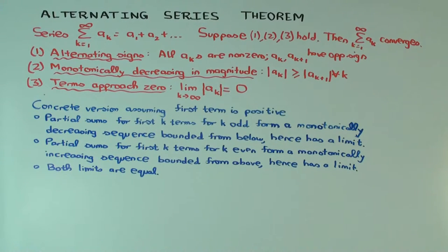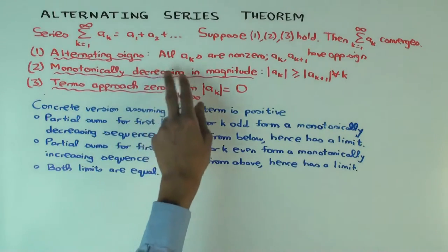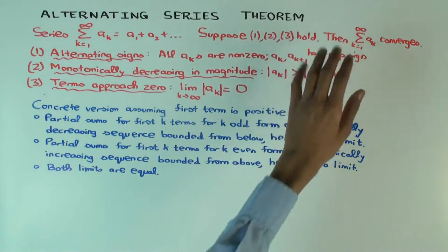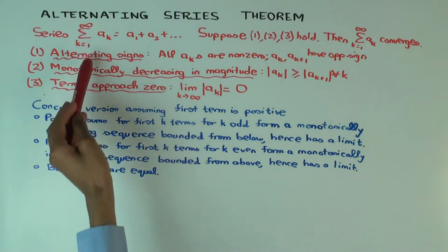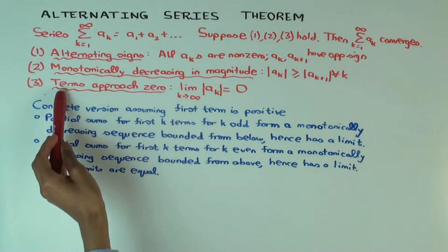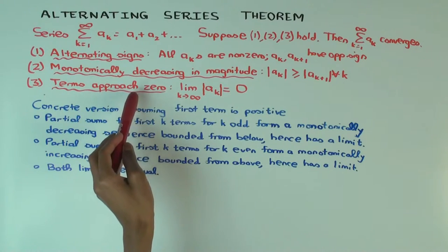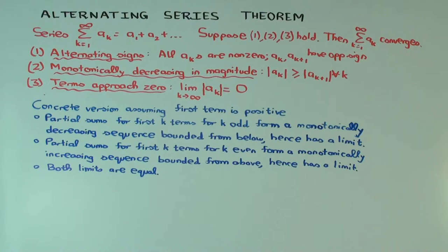Now all conditions are important. If I had alternating signs but the magnitudes were not monotonically decreasing, I would not be able to conclude that the series must converge — it may still converge by chance, but I wouldn't be able to use this theorem. Similarly, if conditions 1 and 2 hold but the third doesn't — so the terms are not going to 0 — then again I will not be able to conclude that the series converges.